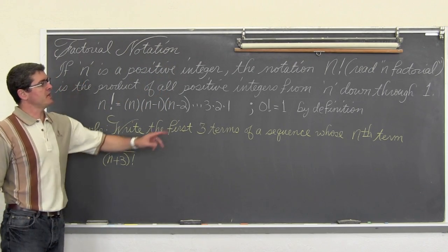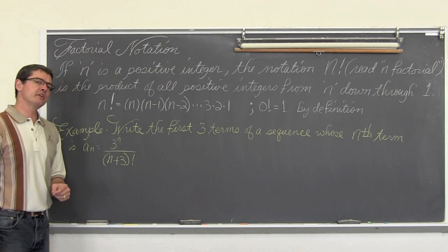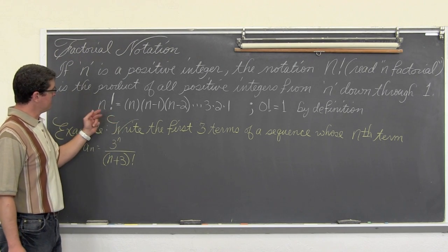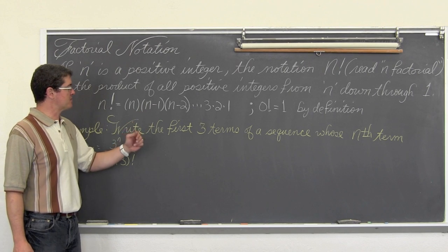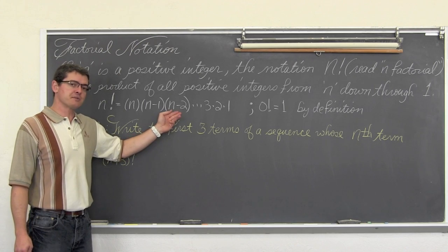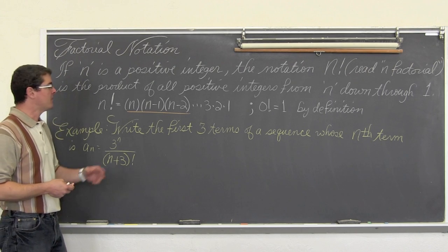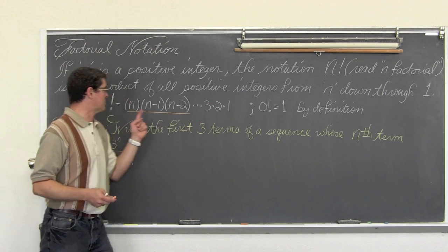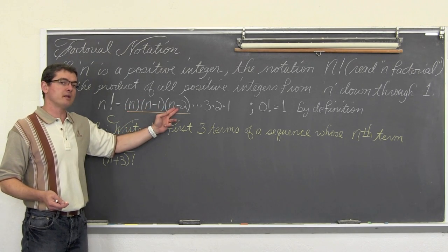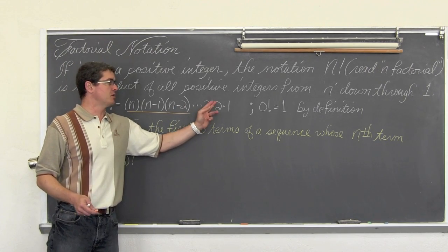If n is a positive integer, the notation n factorial is the product of all positive integers from n down through one. n factorial is equal to n times n minus one times n minus two. We can start with any positive integer and count back by one, then subtract by one again and continue to count back by one until we get to three, two, and one.